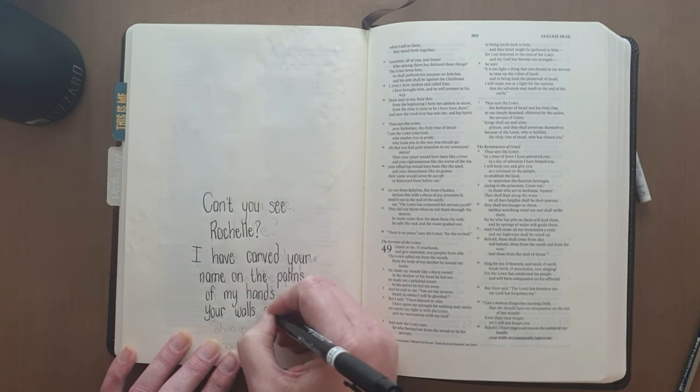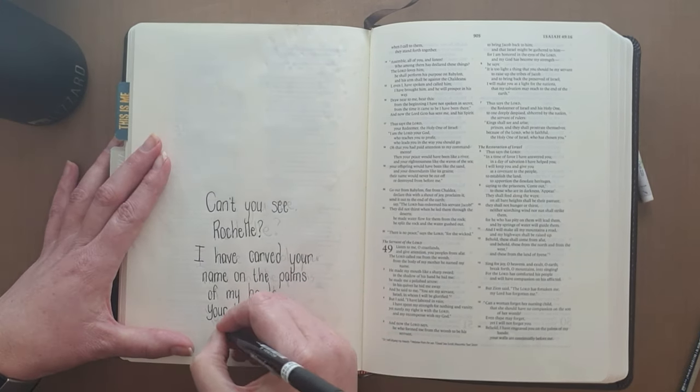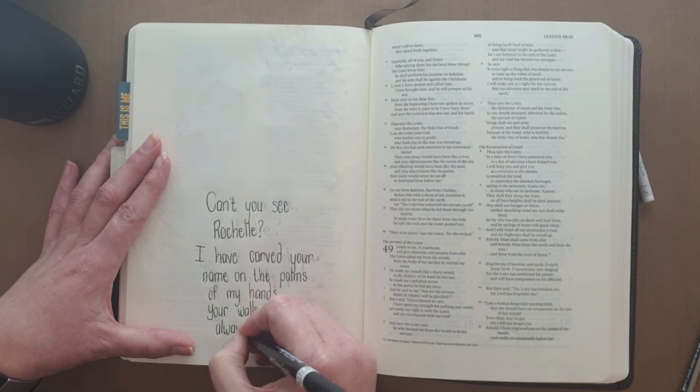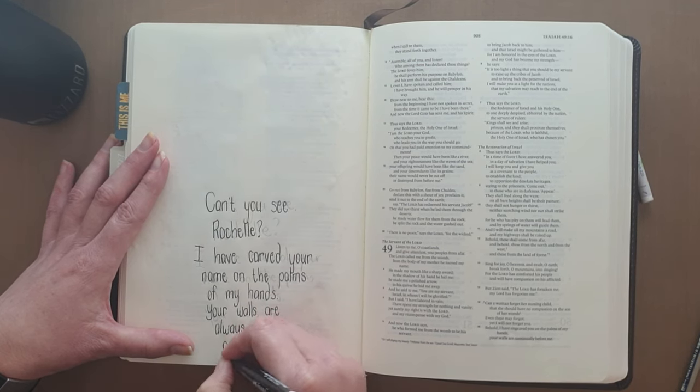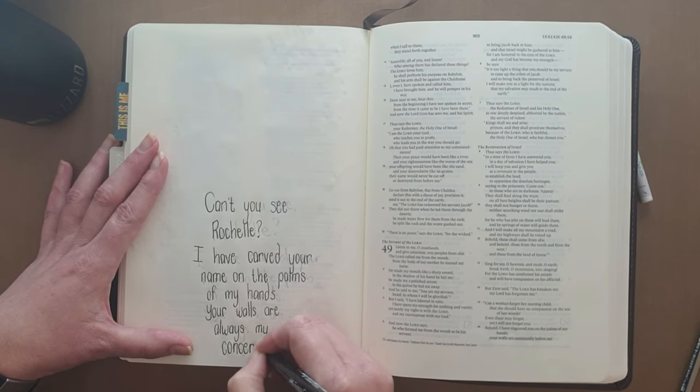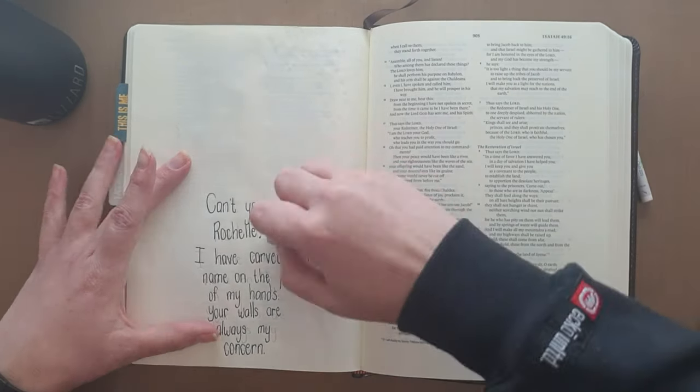Or like the Passion Translation says, Can't you see, Rochelle? I have carved your name in the palms of my hands. Your walls are always my concern.